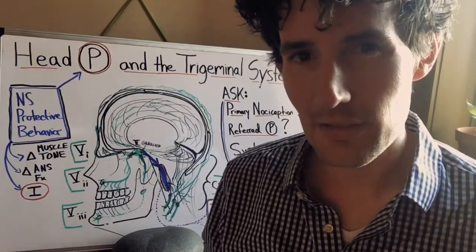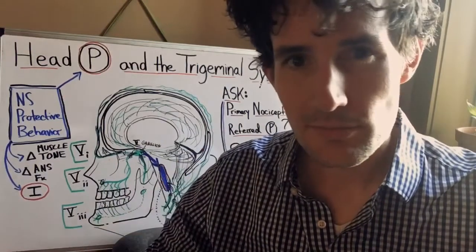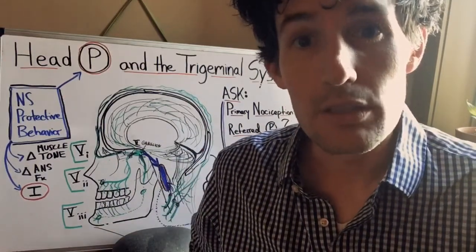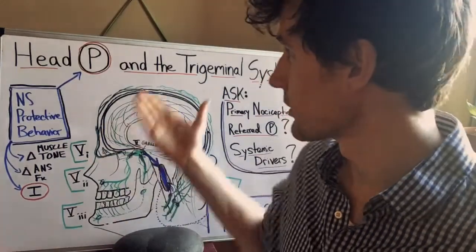So then the key is how to identify which layers of the system are getting threatened and how to deal with that perception of threat. That's where it's helpful to think of the trigeminal system.